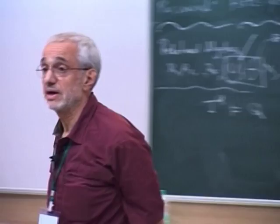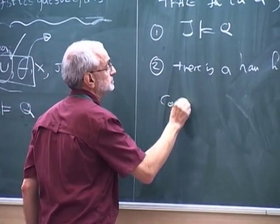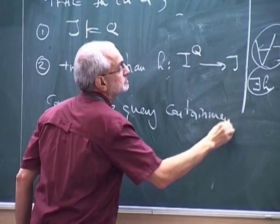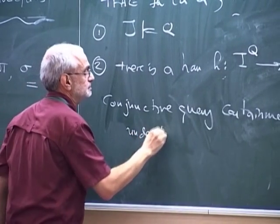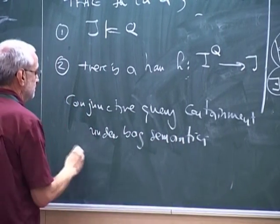The situation is very embarrassing. We don't know if conjunctive query containment under bag semantics is decidable. We know that conjunctive query containment with inequalities — not equal — is undecidable. That's a paper that Eric V., Zeram, and myself had in 2006 with a reduction from Hilbert's 10th problem. But the open problem is conjunctive query containment under bag semantics — is it decidable?